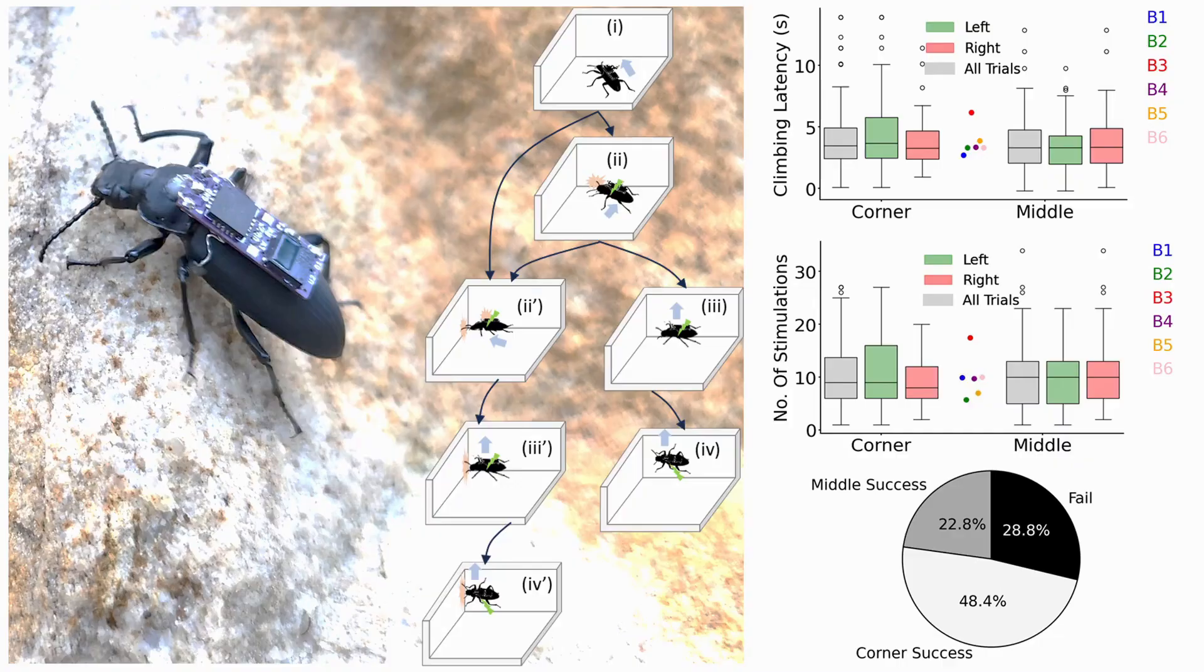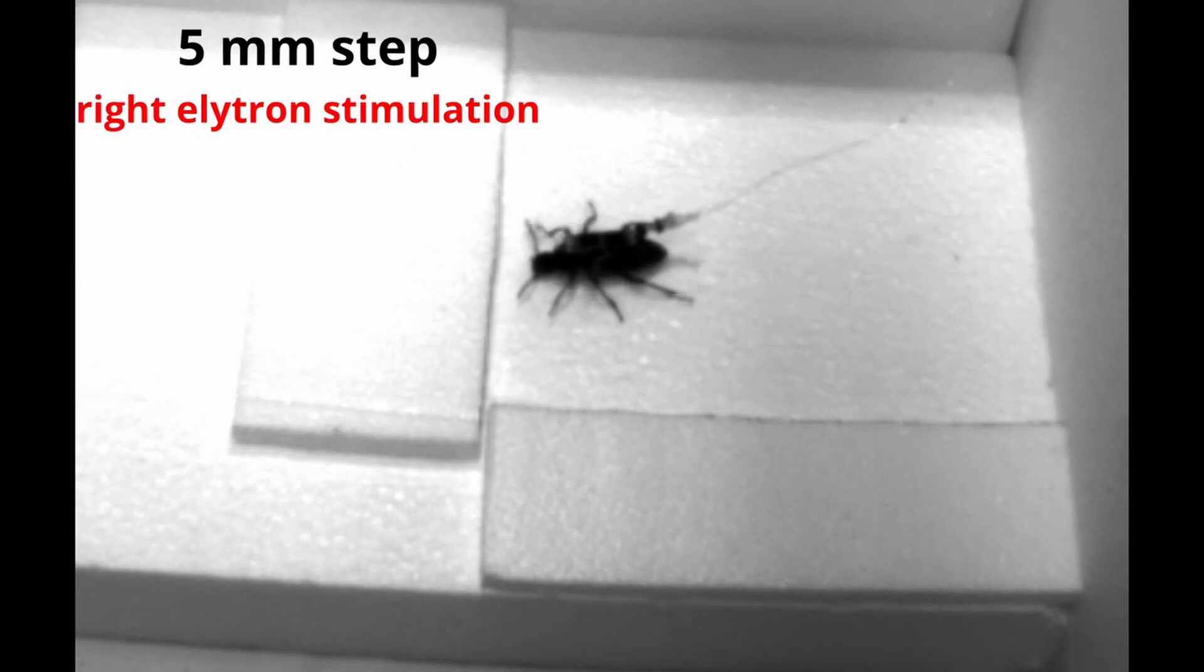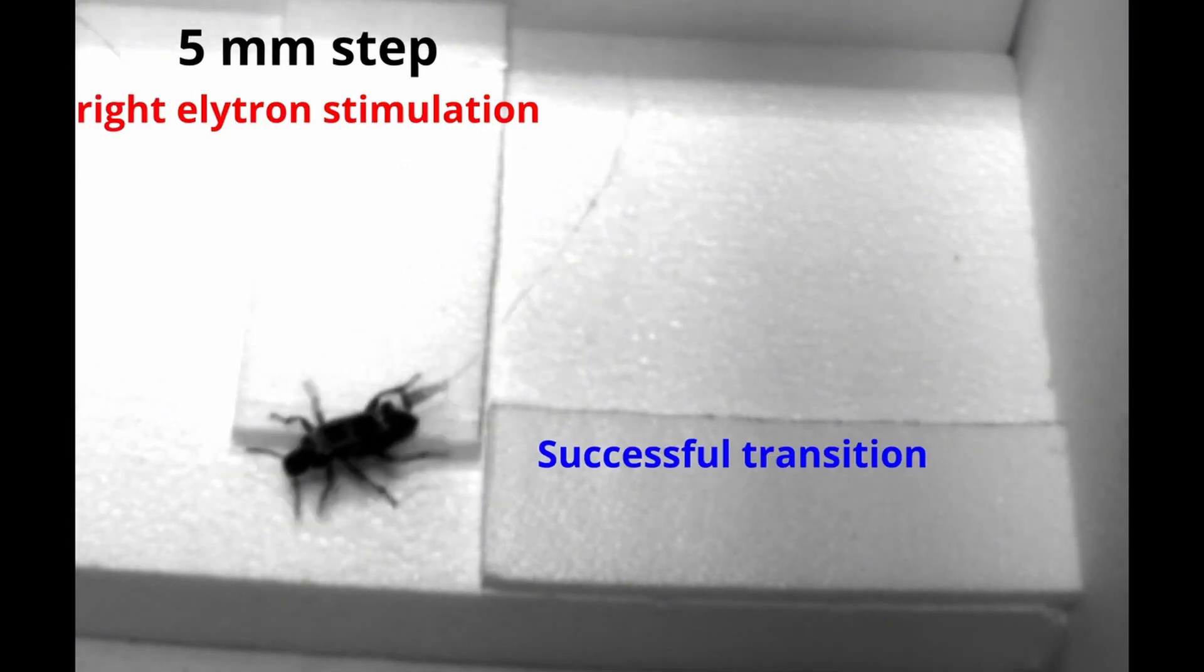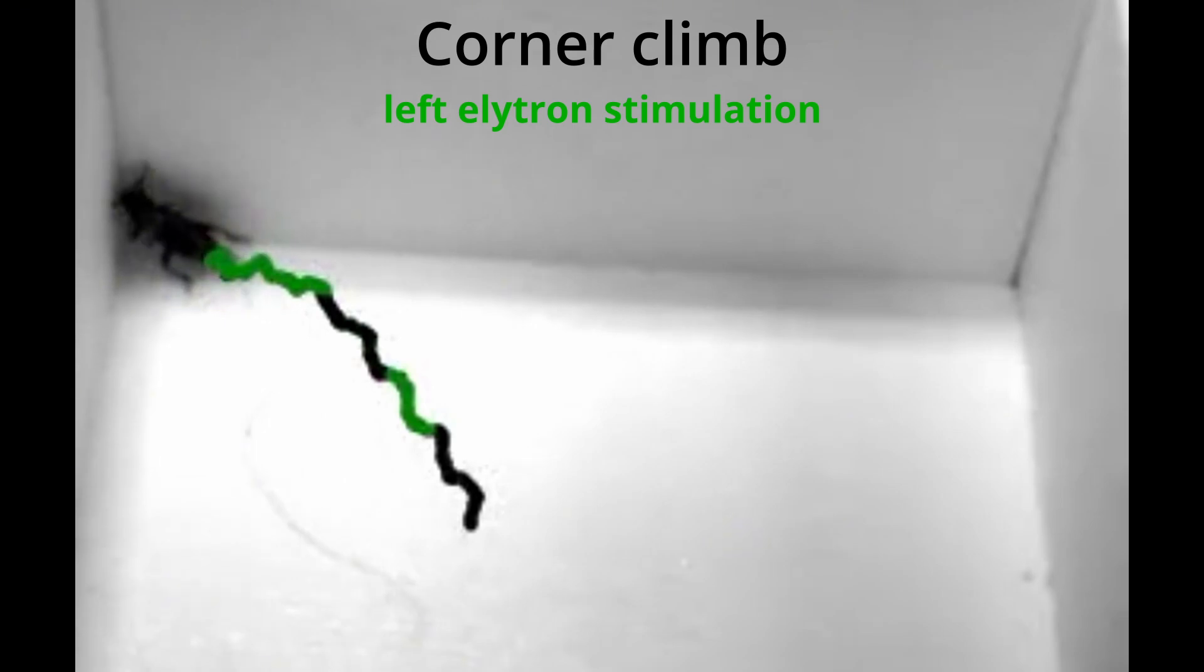The beetles are steered by a human operator holding a video game controller. The key to controlling them lies in the beetle's own sensory system. Electrodes deliver tiny pulses that prompt them to turn or move by stimulating their antennae or the hardened outer wings on their backs.